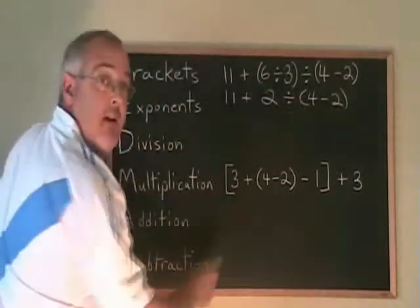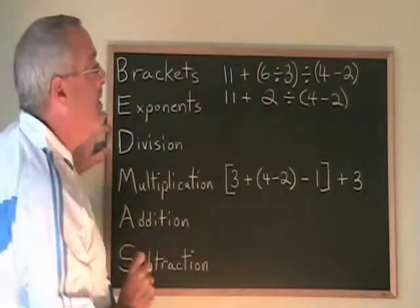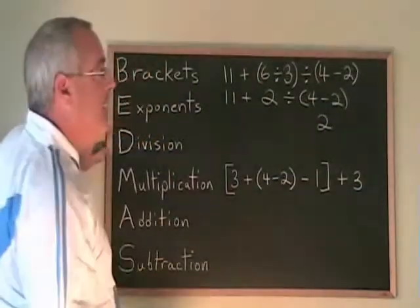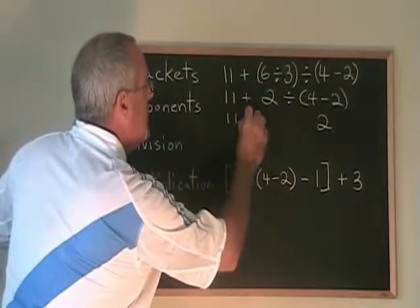Now there's only one bracket left, so that's the next thing we have to do. 4 minus 2 is 2. We write the answer in the place of the bracket, and we copy down the rest.